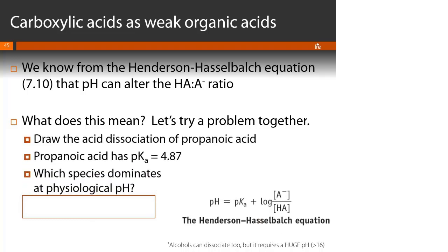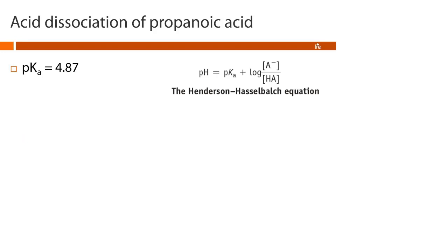First, pause this video and draw the acid dissociation of propanoic acid, then tell me which species dominates at physiological pH, which is 7.4. Propanoic acid is a three-carbon carboxylic acid. We place propanoic acid in water — in this reaction, propanoic acid is the acid and water acts as the base. So propanoic acid is going to donate a proton to water. This chemical reaction exists as an equilibrium, but we're not yet sure which side the equilibrium favors.